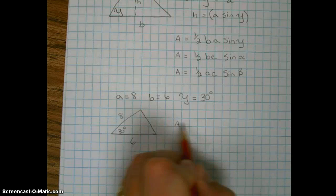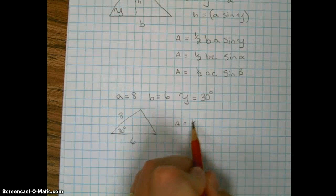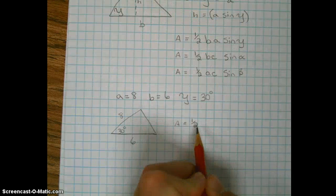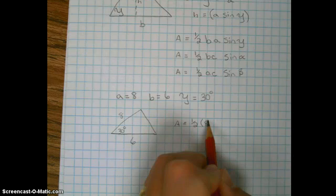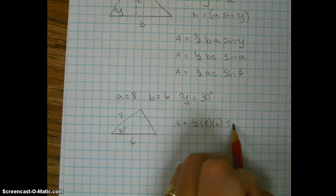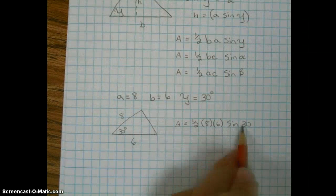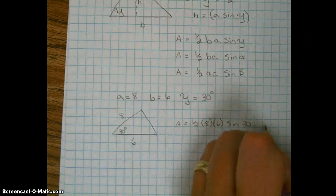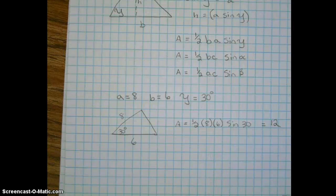we're going to do the area equals one-half, and we're going to do A times B, so 8 times 6 times the sine of gamma, which is 30. And you figure all of that out and you're going to get an area of 12, 12 units squared.